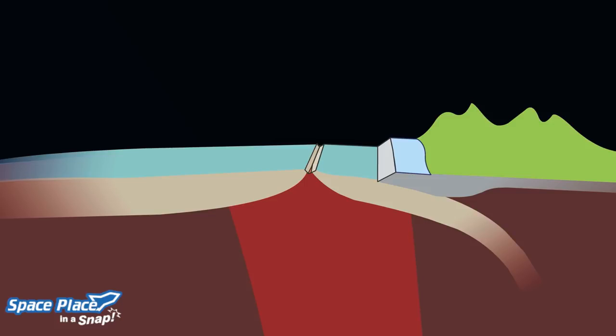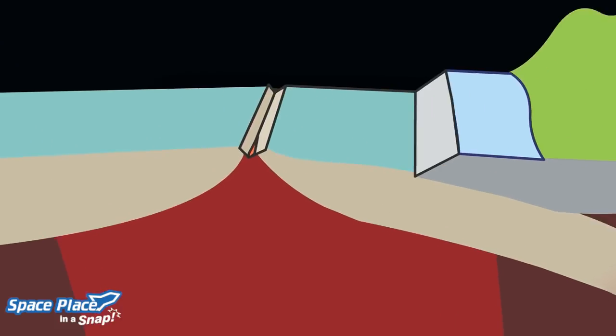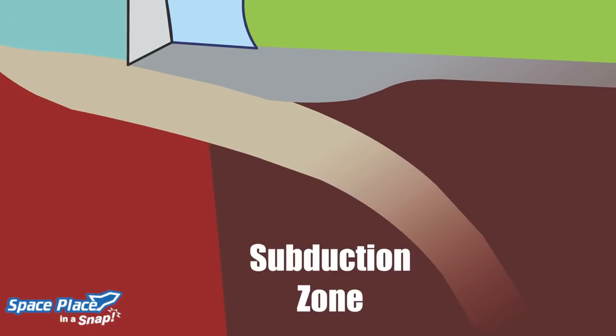The formation of new ocean crust occurs at volcanic mid-ocean ridges. The destruction of old ocean floor happens in subduction zones.